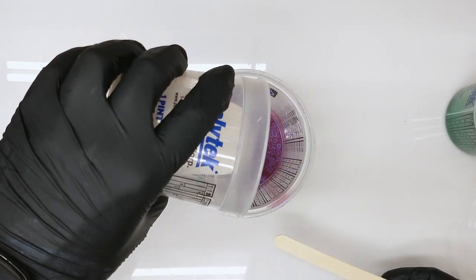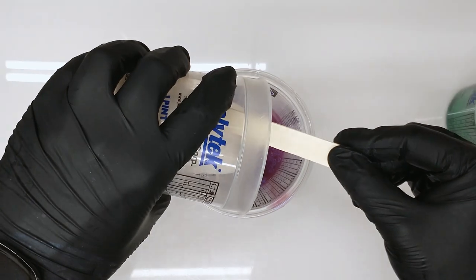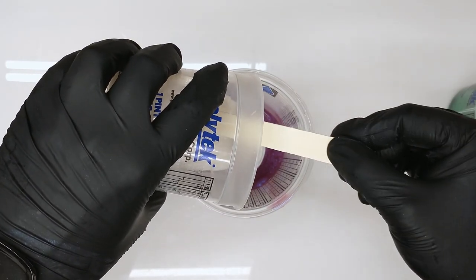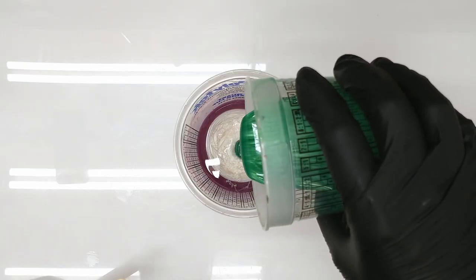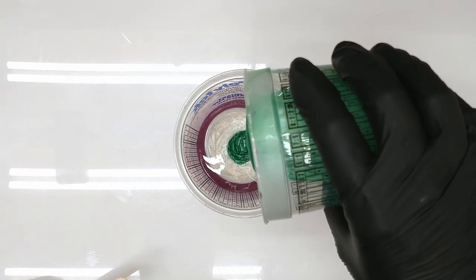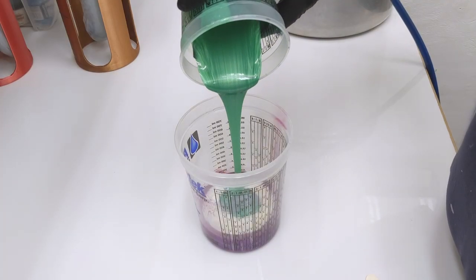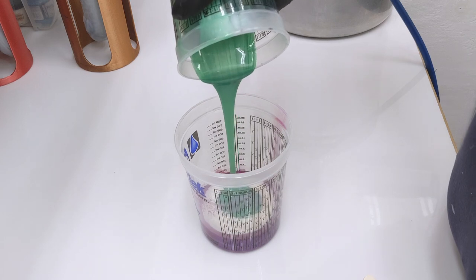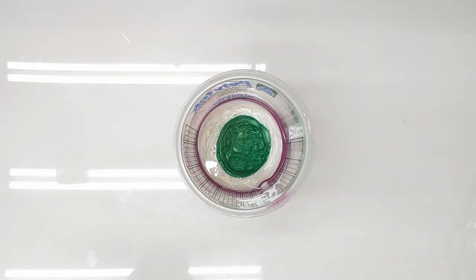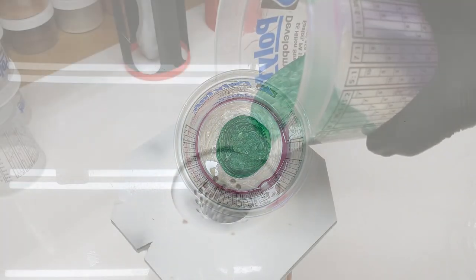Using our big cup as our base, we're going to add our other two colors on top, creating a bullseye, a target if you will. Keep in mind, the second color is going to be the highlight, and the third color is going to be the tip. This is what I ended up with.